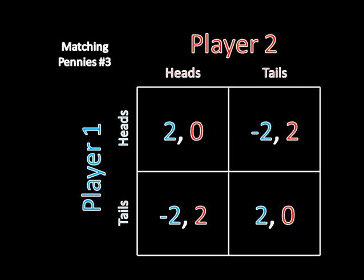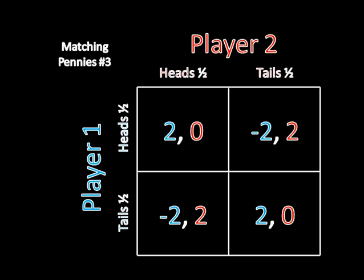And in this game, which I'm calling matching pennies three, I've just taken what we saw in matching pennies two and added one to player two's payoffs. So all of the negative ones became zero for her, and all of the positive ones became twos for player two. I'm guessing you can already figure out what the mixed strategy equilibrium is for this game — it is, in fact, for both players to mix with probability one-half along both of their strategies.